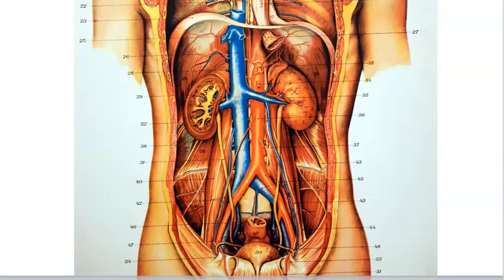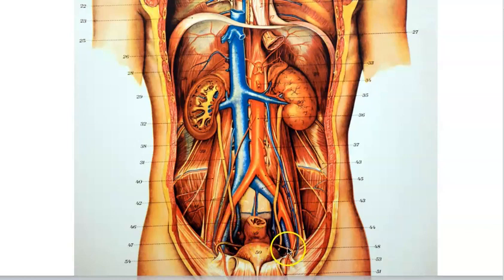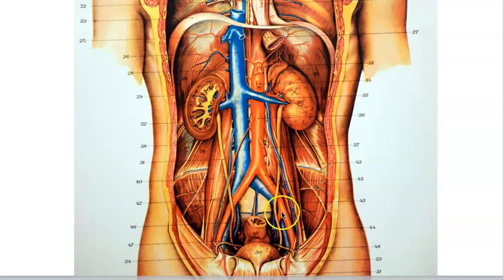Moving to the abdominal veins: the external iliac vein and internal iliac vein are right next to their arterial counterparts on both the right and left sides. They follow the same pattern — external iliac vein, internal iliac vein, common iliac vein — and the common iliac veins drain into the large inferior vena cava.